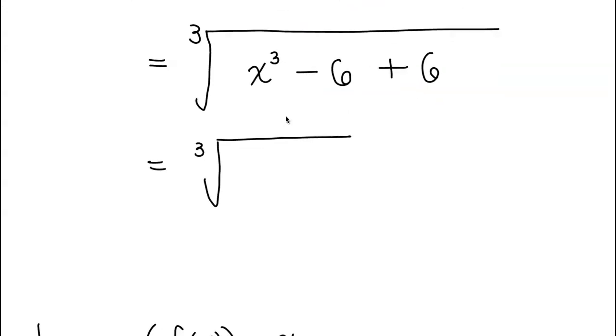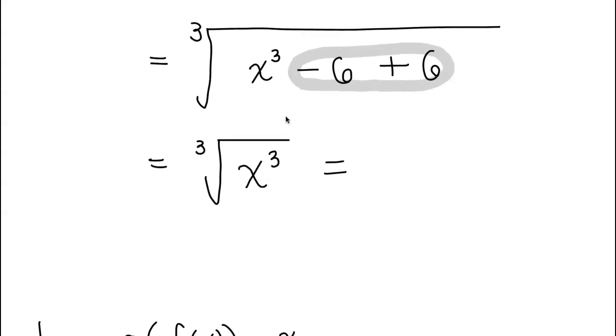Bring down that plus 6, and now let's simplify the inside part of this cube root. Look what happened: this negative 6 and positive 6 will cancel out, so I only really have cube root of x cubed. Now what does that come out as?